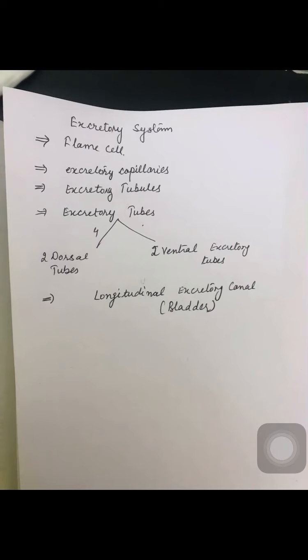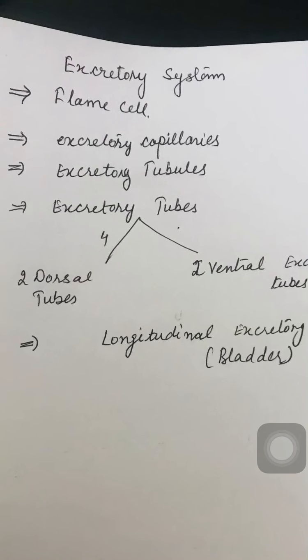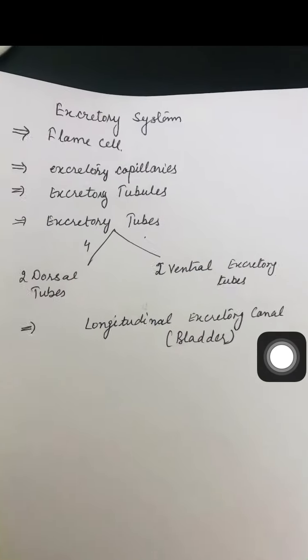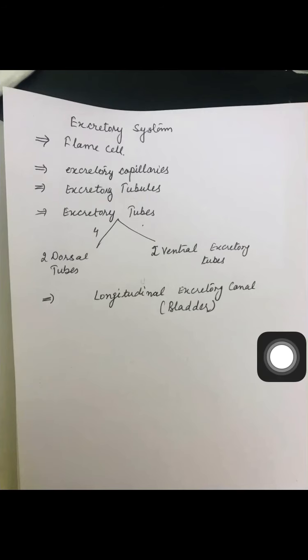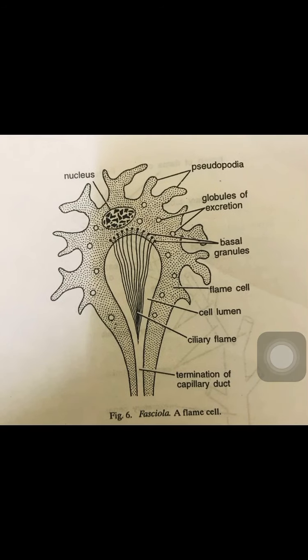From the flame cells, excretory capillaries arise. The excretory capillaries unite into excretory tubules, and there are four excretory tubes — two dorsal and two ventral — and these lead into a longitudinal excretory canal that is called the bladder.